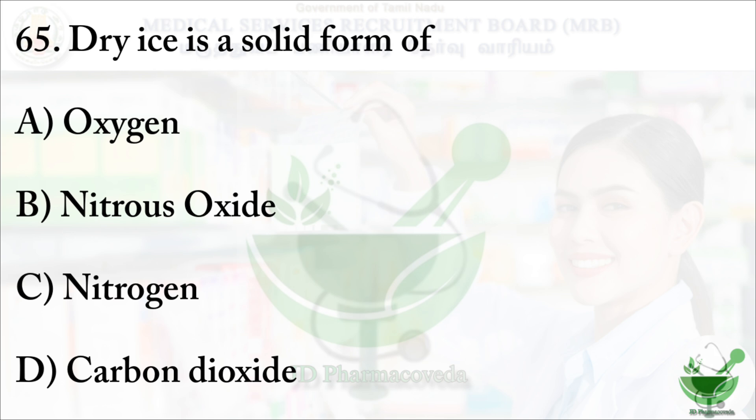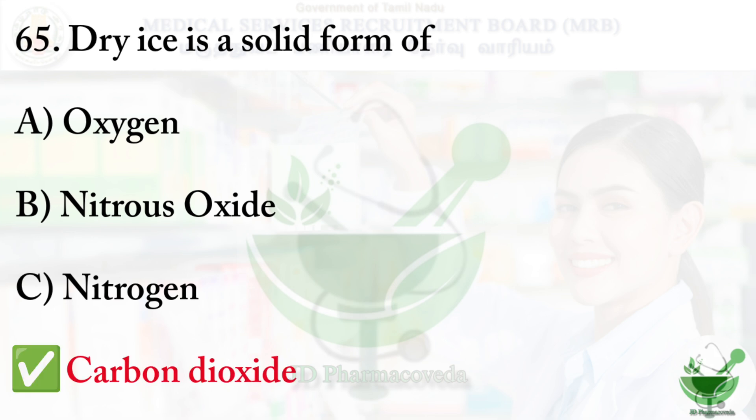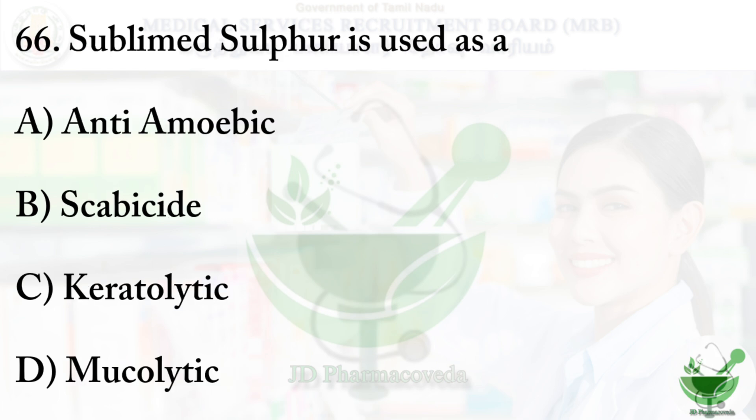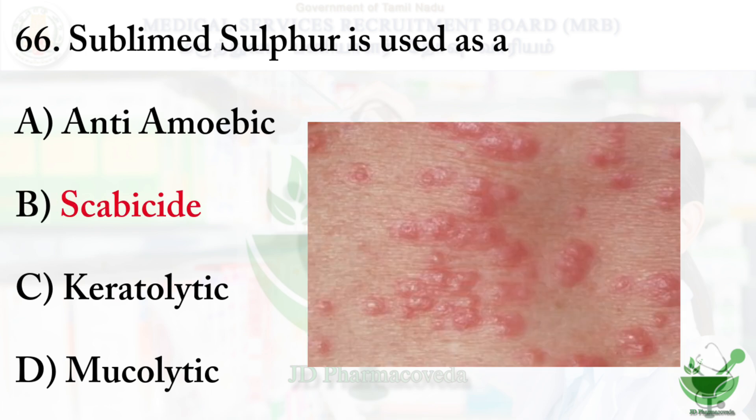Question number 65: dry ice is a solid form of carbon dioxide gas that turns directly into a gas, skipping the liquid phase. The options are: option A: anti-amoebic. Option B: scabicide. Option C: keratolytic. Option D: mucolytic. The right option is option B, scabicide — a drug that destroys the mite that causes scabies. These types of mites are present in dogs also, and when they bite humans, scabies disease can spread.